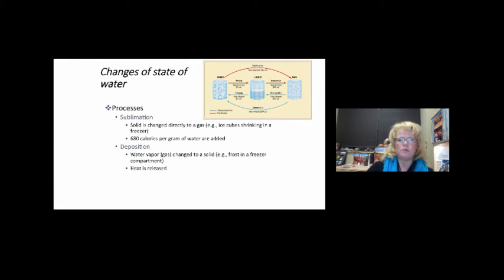Sublimation is when solid changes directly into gas. Ice cubes shrinking in the freezer would be a great example, absorbing 680 calories. Deposition is when vapor changes back into solid, like frost in your freezer, and heat gets released at 680 calories.